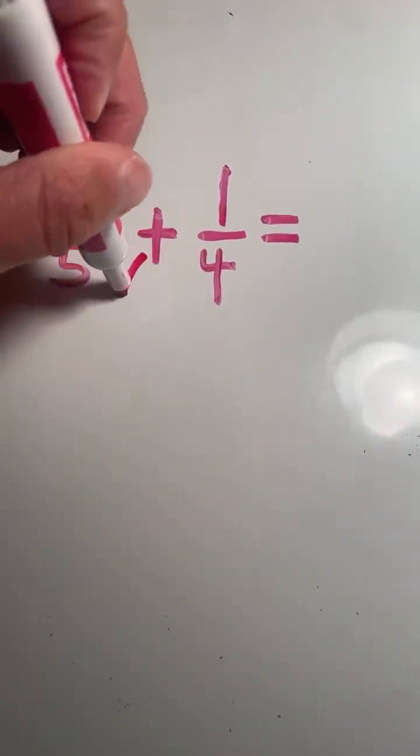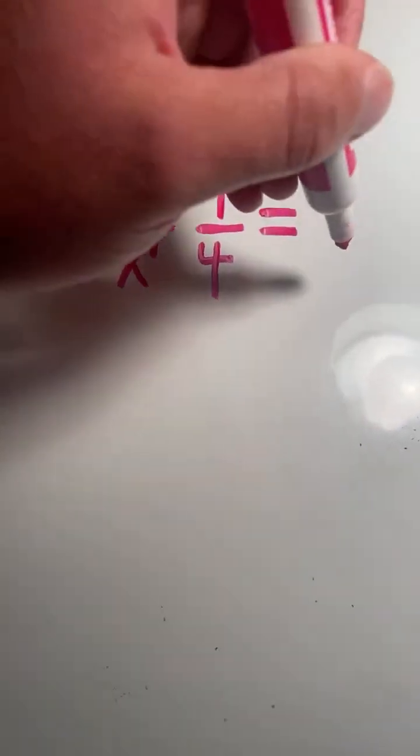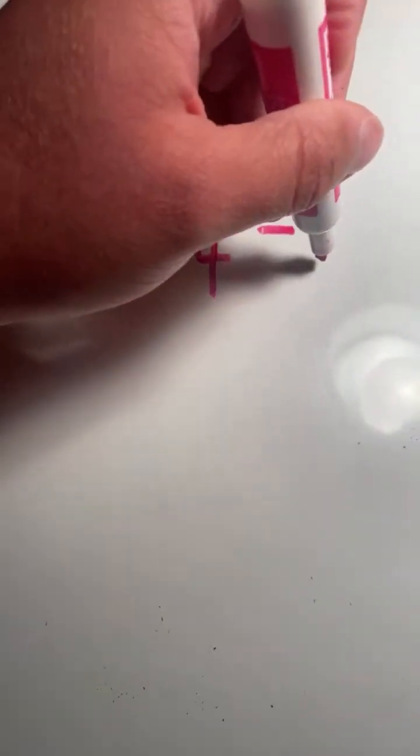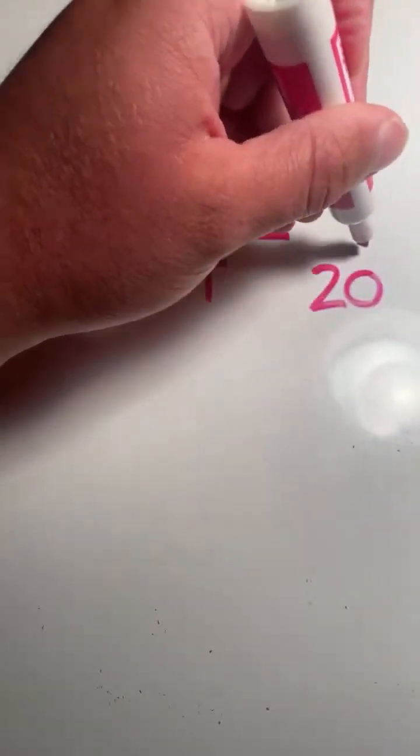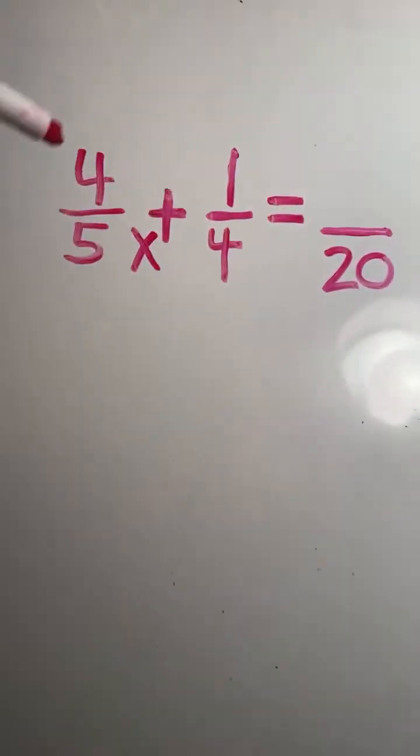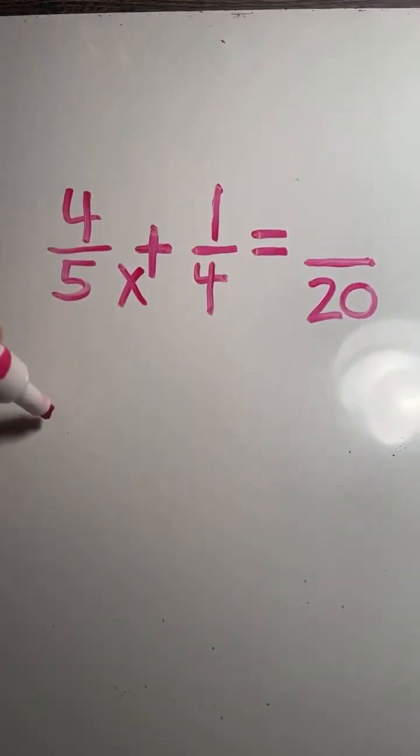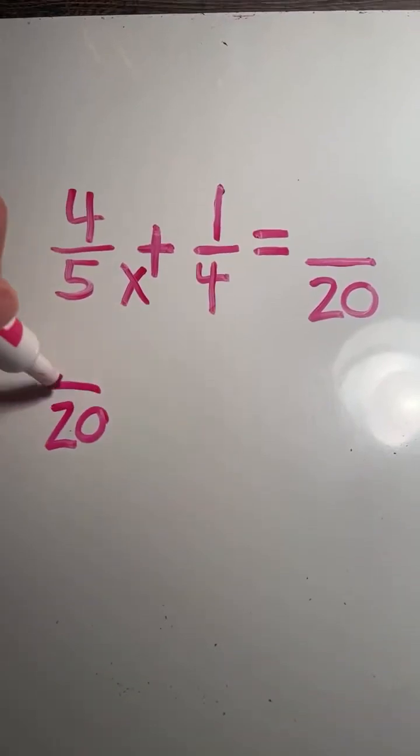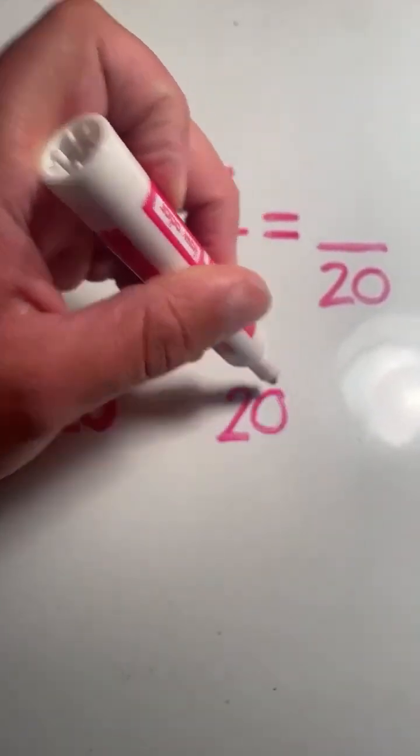We do that by multiplying our two separate denominators. So five times four, we have to multiply five times four. Five times four equals 20. So 20 is going to be our common denominator for this problem.